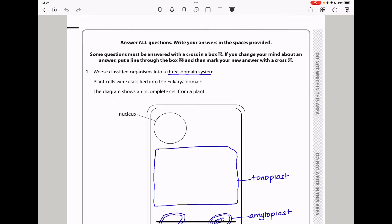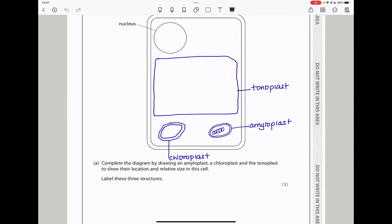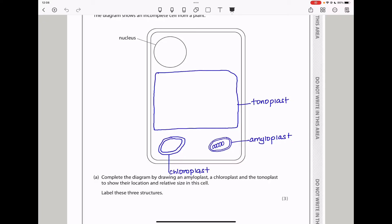The question states that plant cells were classified into the eukaryota domain. The diagram shows an incomplete cell from a plant. Complete the diagram by drawing an amyloplast, a chloroplast, and the tonoplast to show their location and relative size in this cell. The biggest one is going to be the tonoplast, as you can see, because this is the membrane surrounding the vacuole. And then we have the chloroplast here, and lastly, the amyloplast.